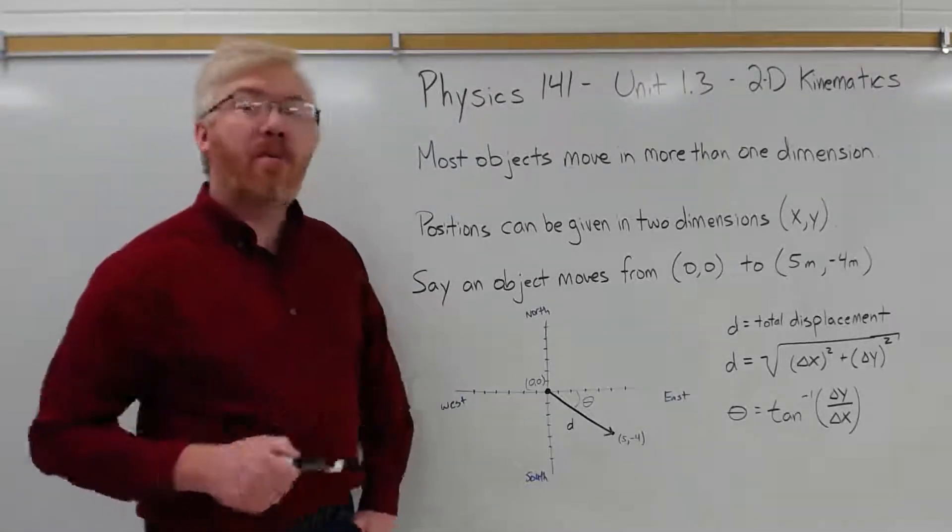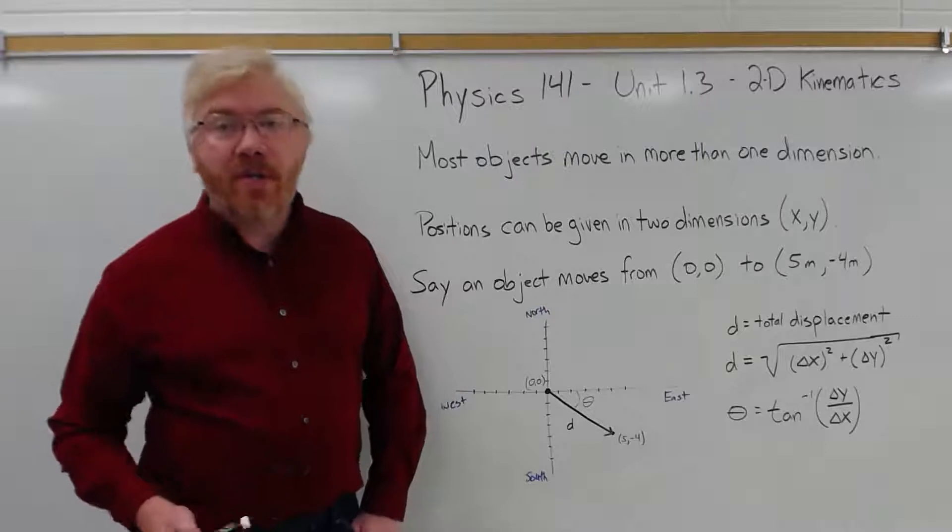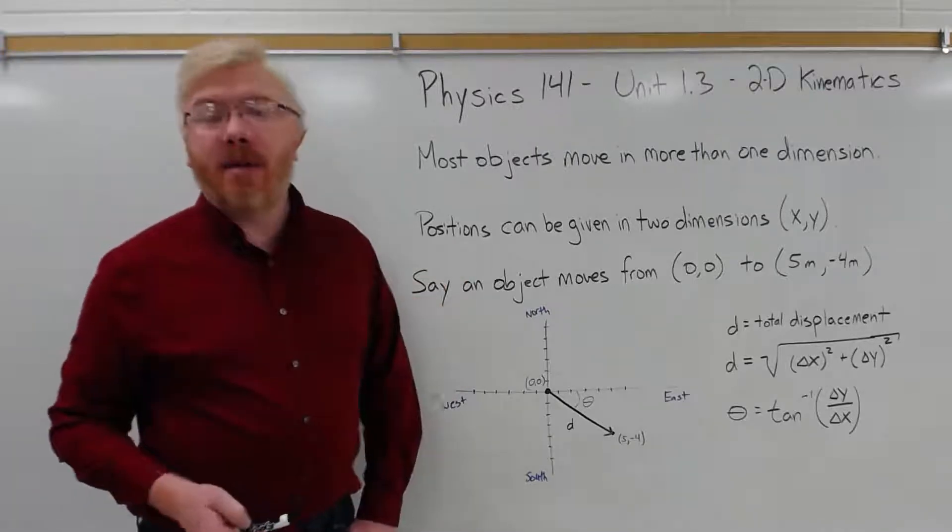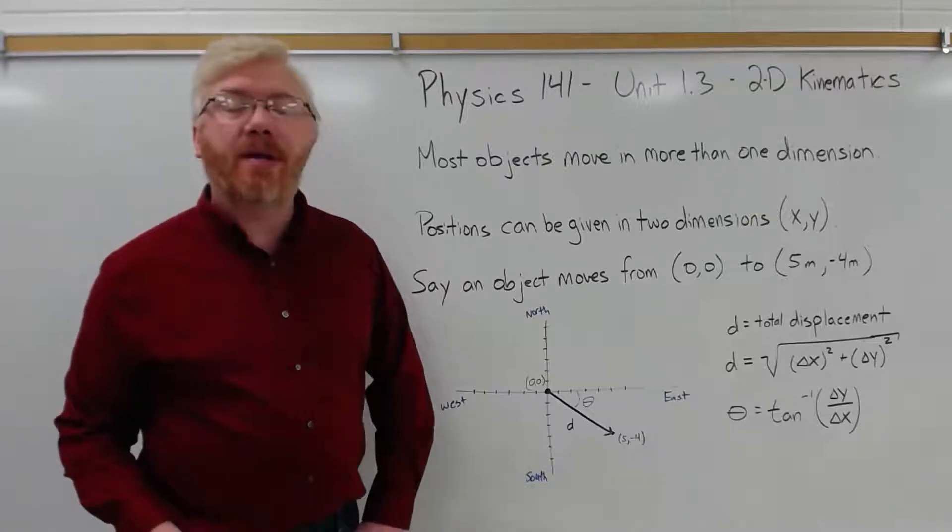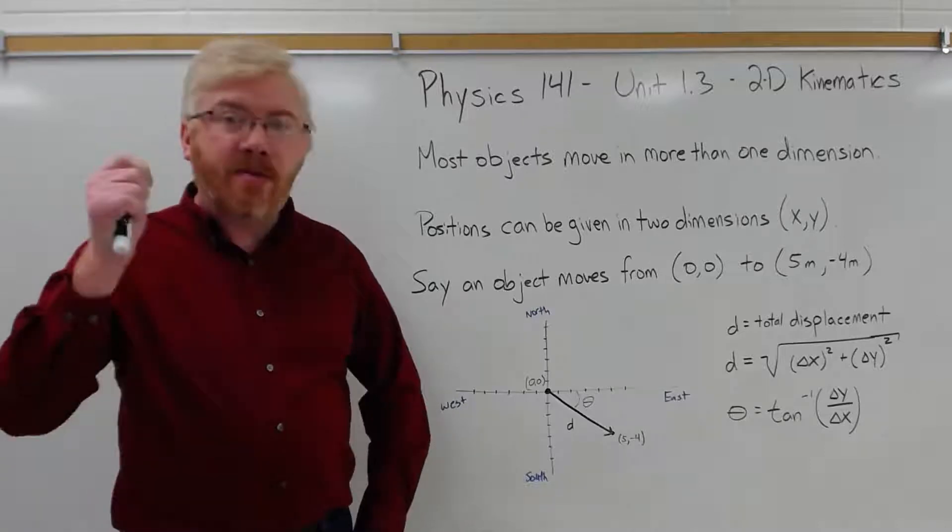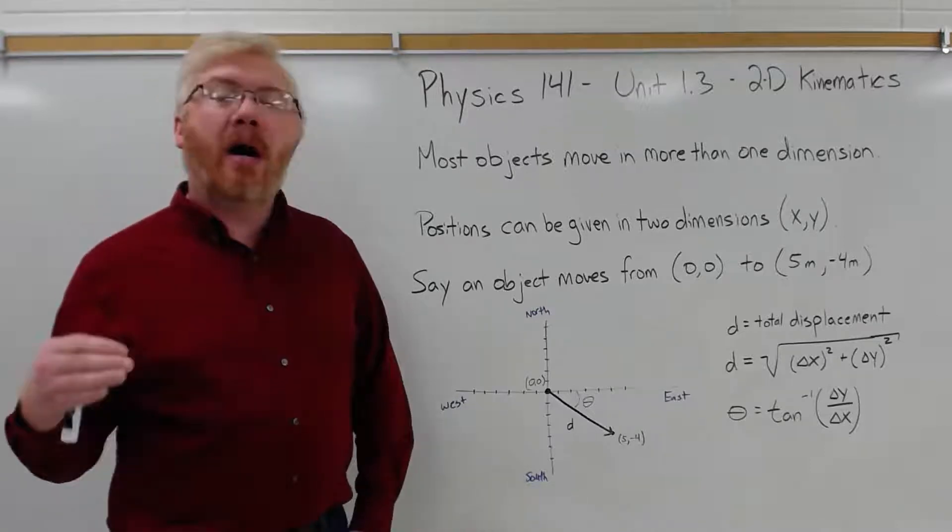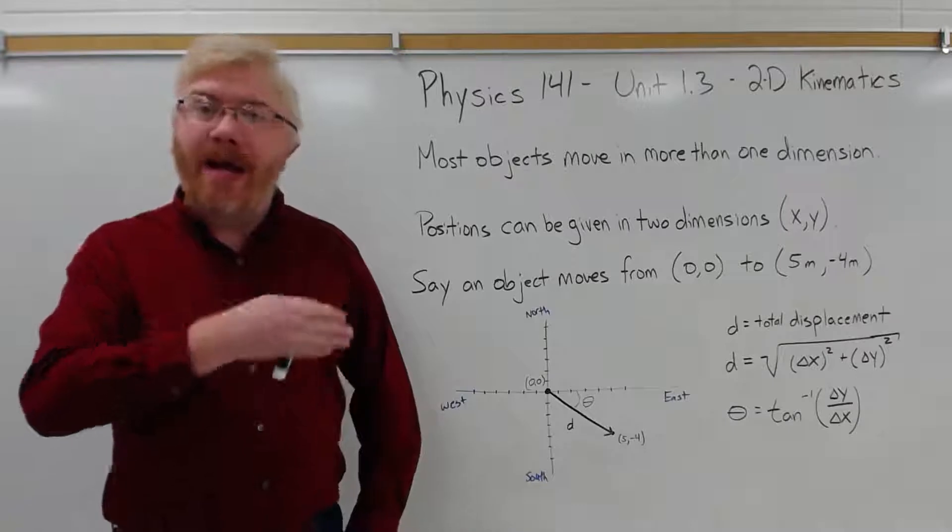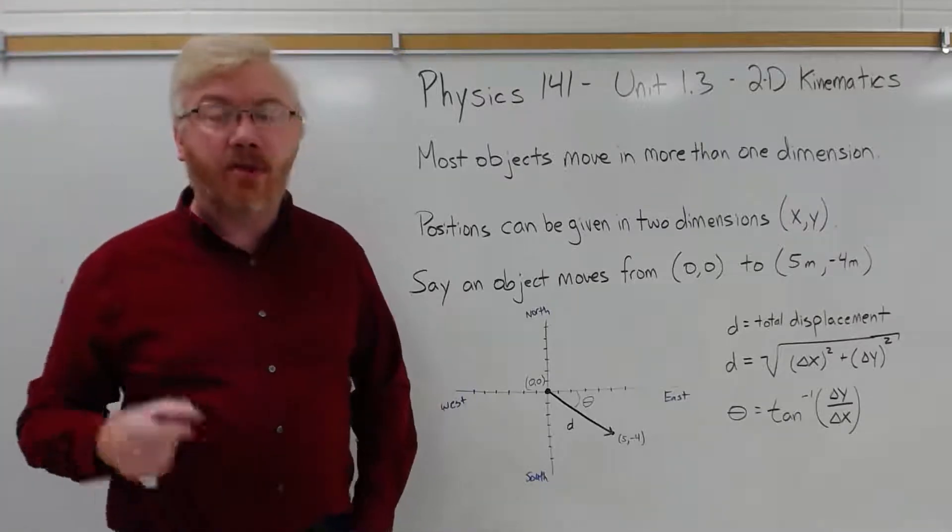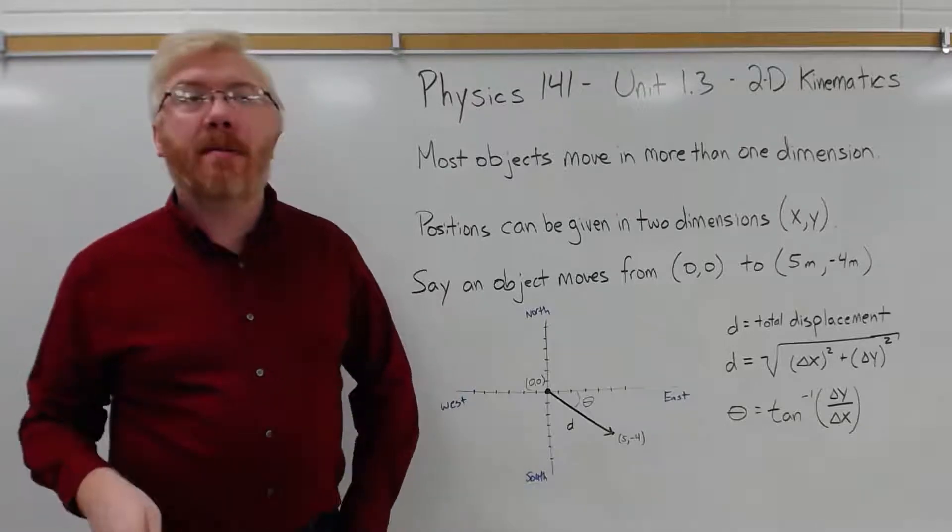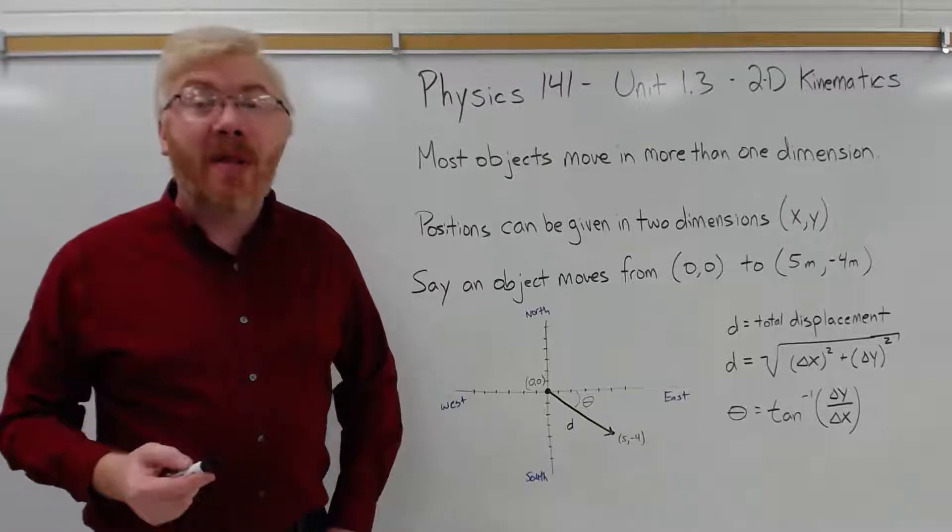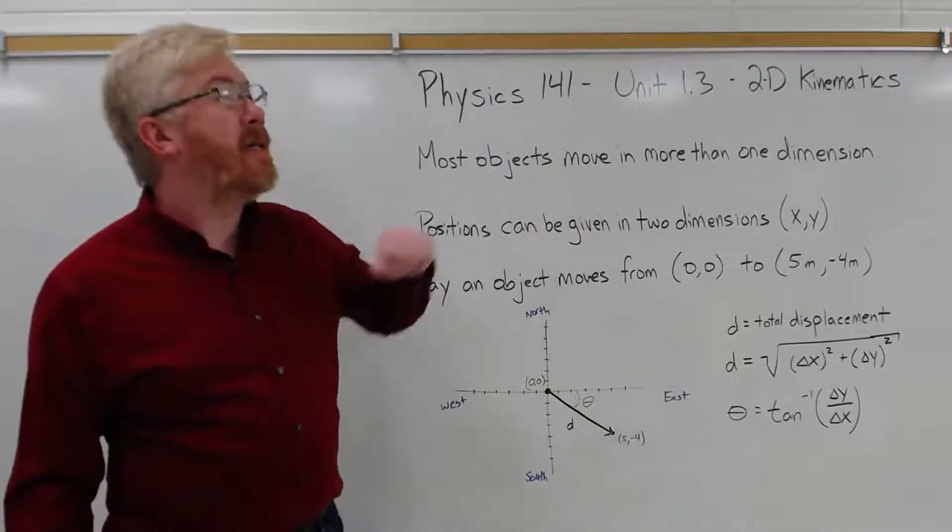Starting this next unit, unit 1.3, we'll be looking at two-dimensional kinematics. Two-dimensional kinematics is necessary because objects tend to move in more than one dimension. Only a very small subset of objects follows motion in one direction. A car accelerating or decelerating on a straight-line path, or an object falling without any horizontal motion, just falling straight down. These are examples of one-dimensional motion, but the universe is more complex than that. So we're going to expand into two-dimensional motion.